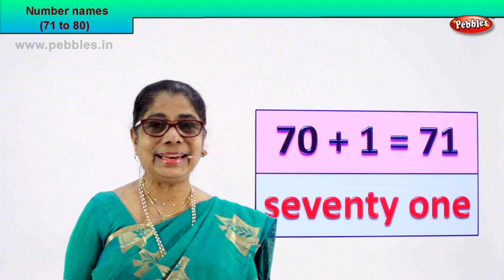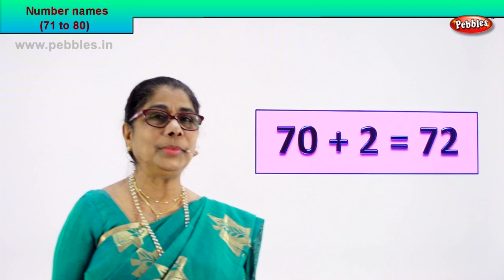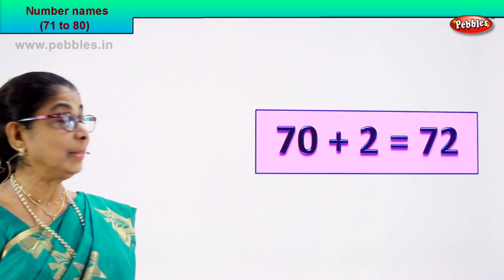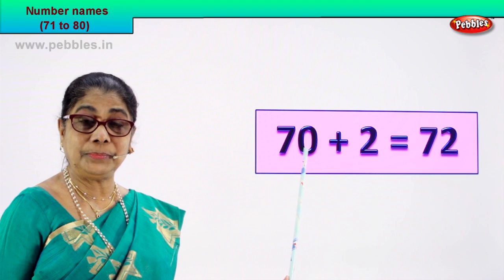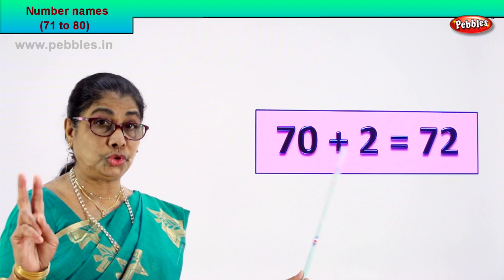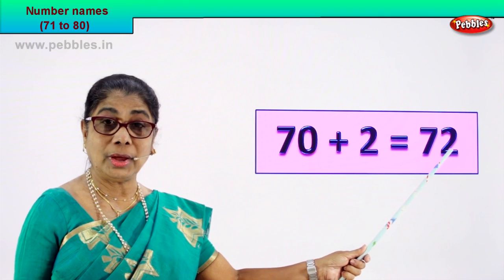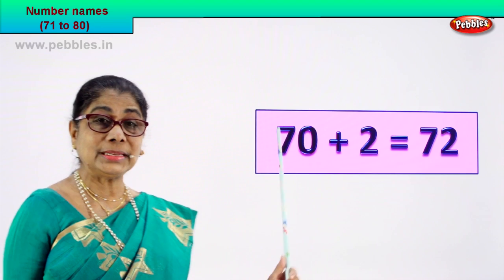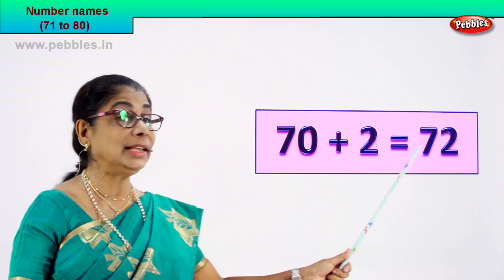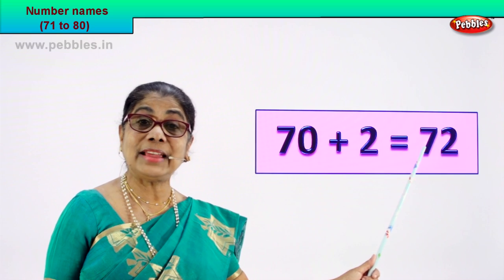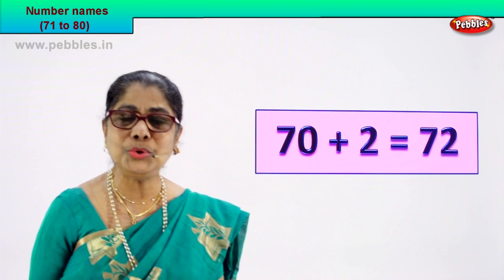So you are learning. Let us go to the next number — how we form the number and let us see the number name too. 70 plus 2 is equal to 72. 7 and 2 — 72. That's the numeral.